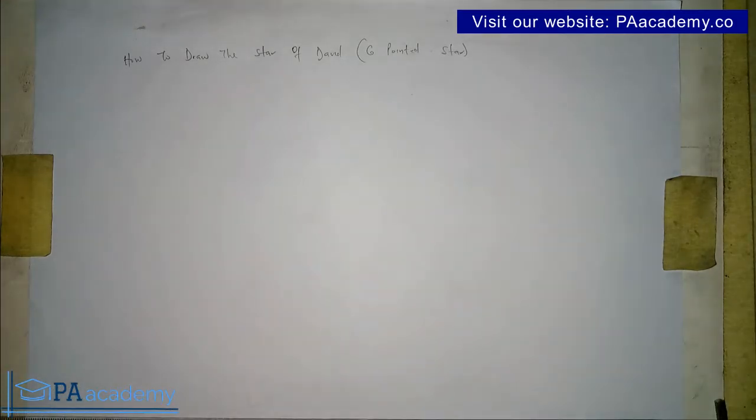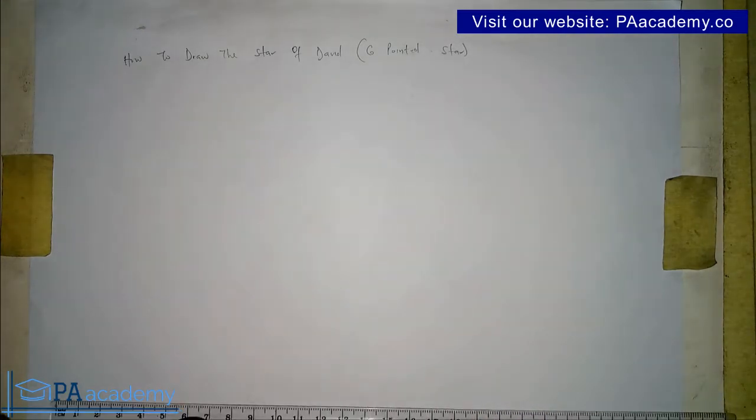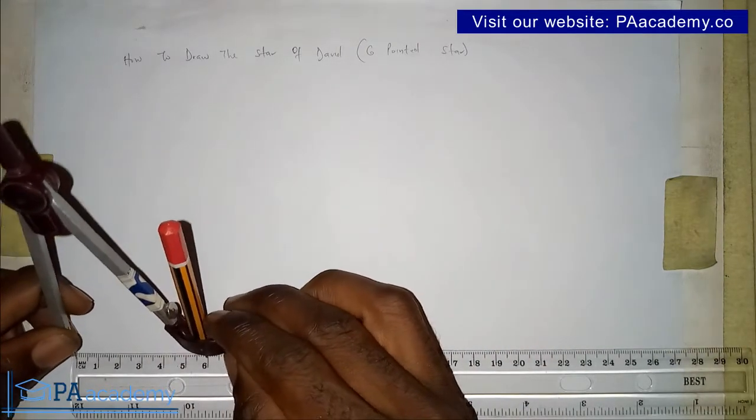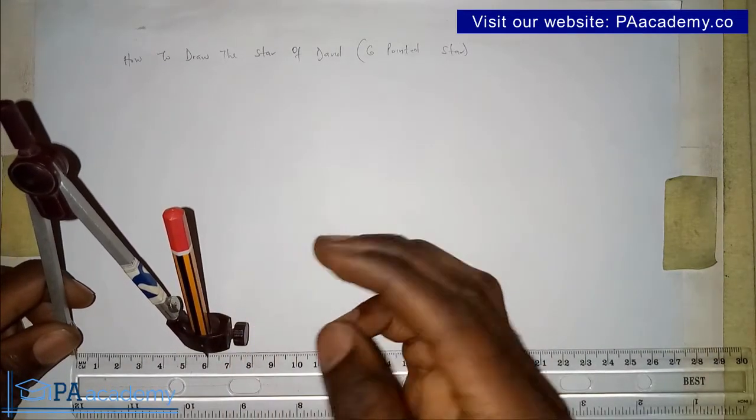In drawing a hexagon, there are different approaches, but I'm going to be using the circle method. That's just drawing a circle with our compass to draw our hexagon. The hexagon I'm going to be drawing here, I'm going to be drawing a circle with a radius of six centimeters.